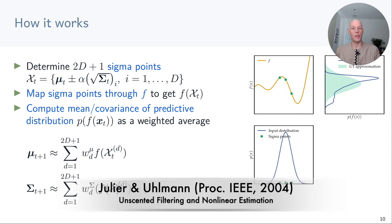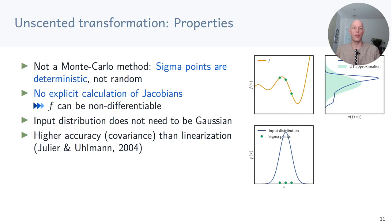Looking at the properties of the unscented transformation: first, this is not a Monte Carlo method — the sigma points are deterministically chosen with no source of randomness. A good thing is that we don't need to compute Jacobians, meaning the transition function can be non-differentiable. Also, the input distribution doesn't have to be Gaussian. The unscented transformation also gives slightly better accuracy in estimating the covariance than the linearization approach.